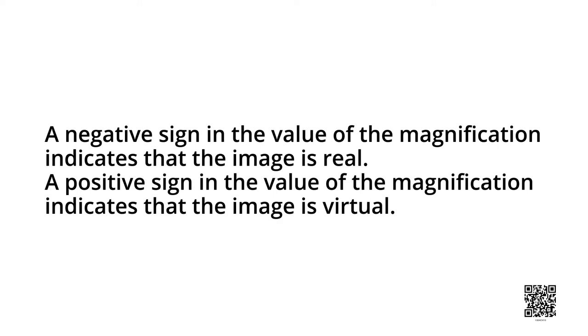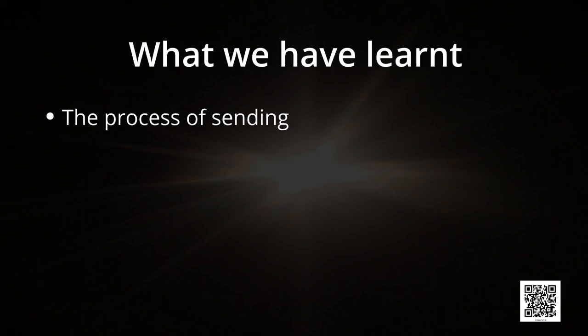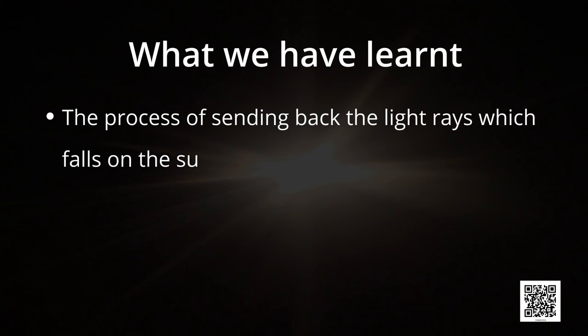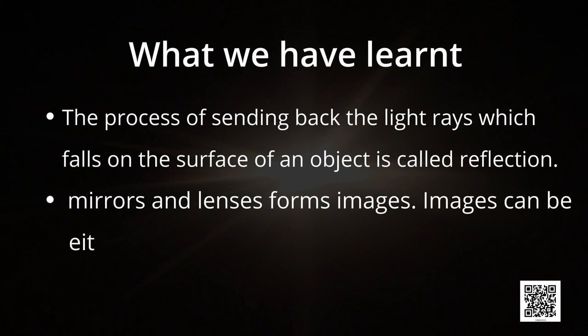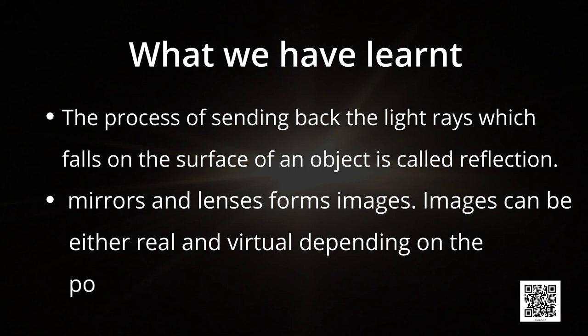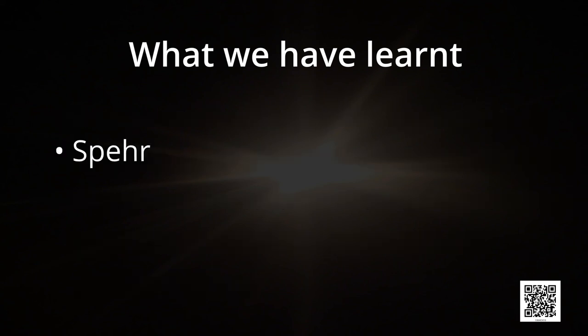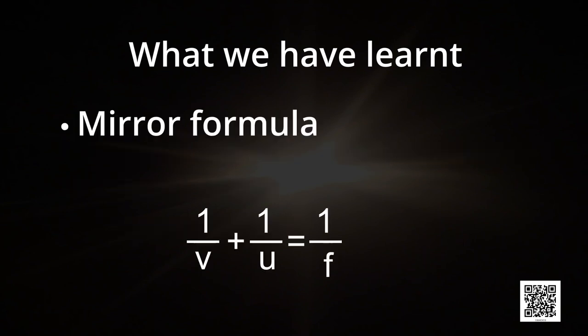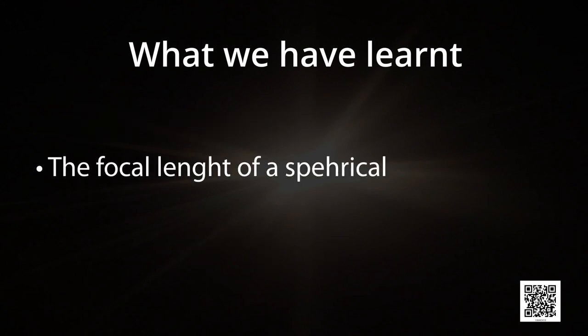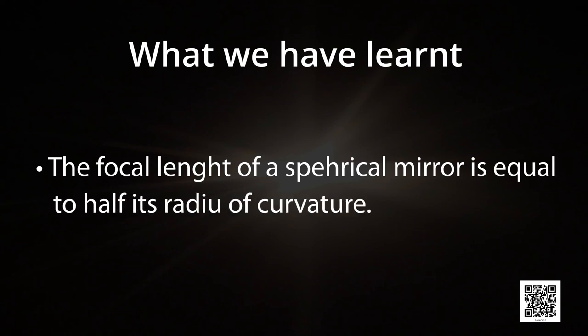So dear children, let us see what we have learnt in this chapter. The process of sending back the light rays which fall on the surface of an object is called reflection. Mirrors and lenses form images, which can be either real or virtual depending on the position of the object. Spherical mirrors are of two types: convex mirror and concave mirror. The mirror formula 1/v + 1/u = 1/f gives the relationship between the object distance u, image distance v, and focal length f. The focal length of a spherical mirror is equal to half its radius of curvature.